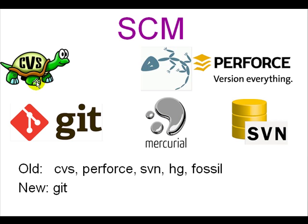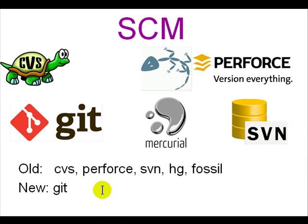CVS is the most commonly used for many years till Git came along, and there is Perforce which is used by big companies like Google, and Mercurial which is another version still around for public domain code. SVN was similar to CVS and there is still HG and Fossil going around, but the new one is Git.